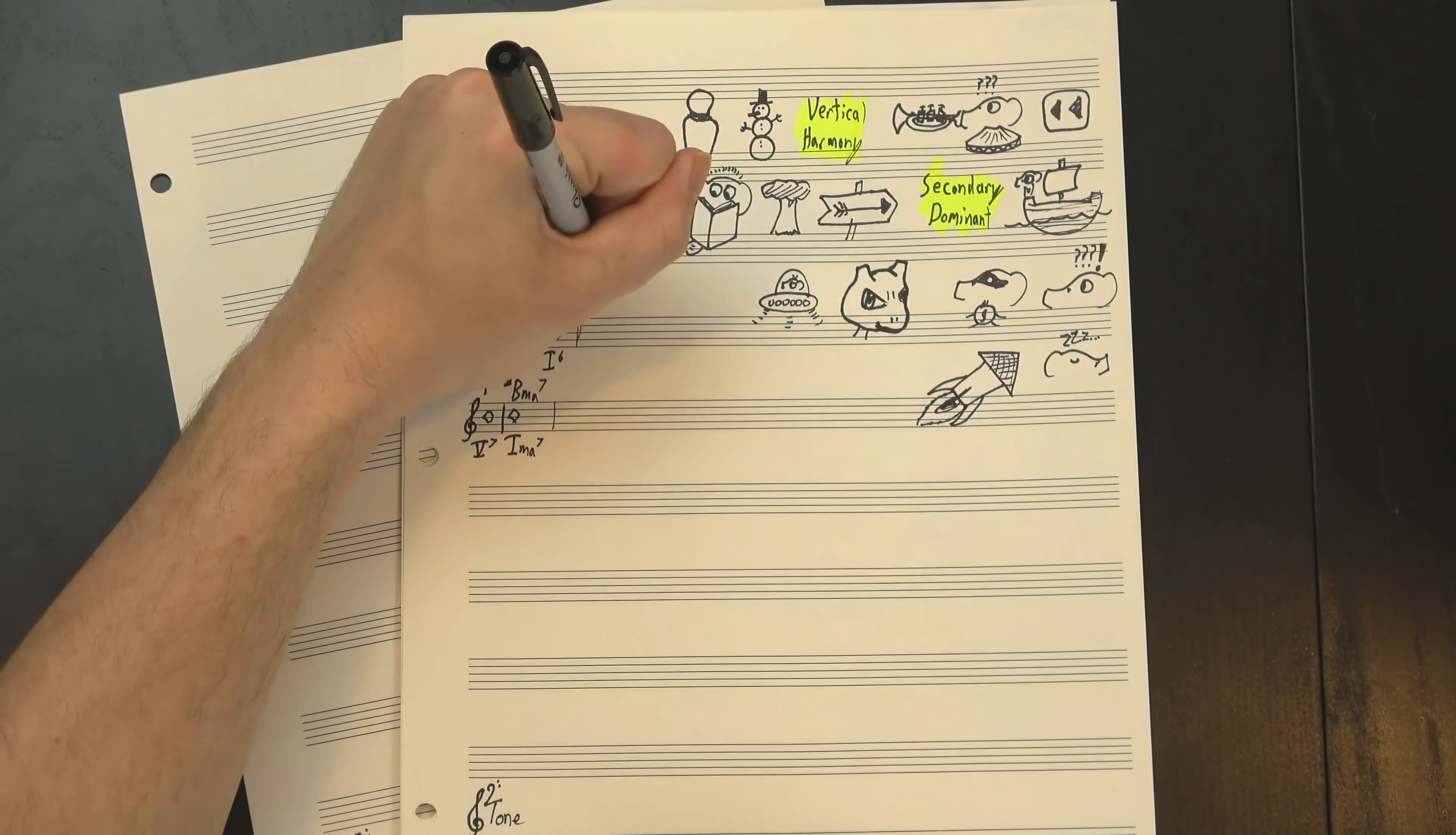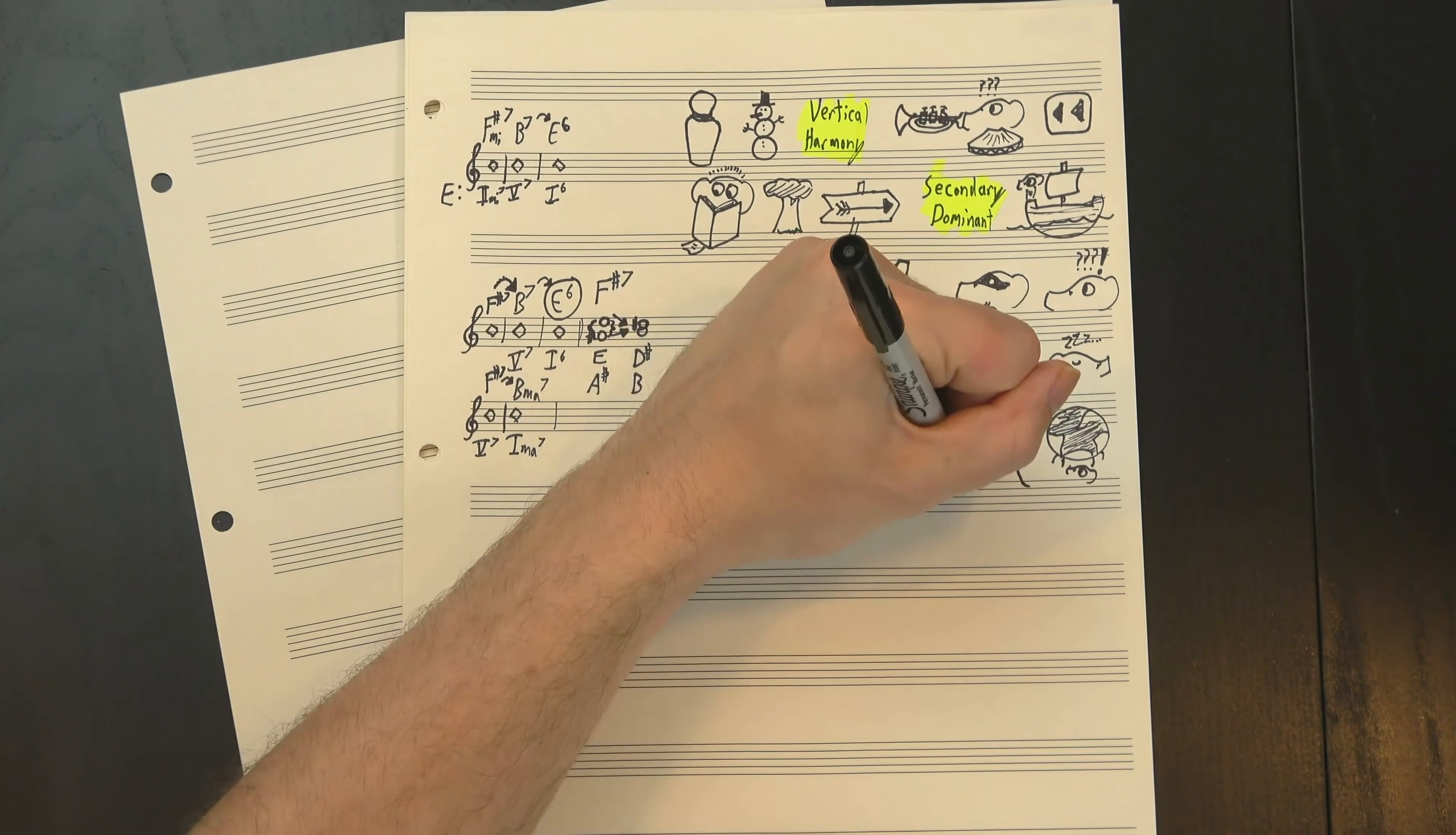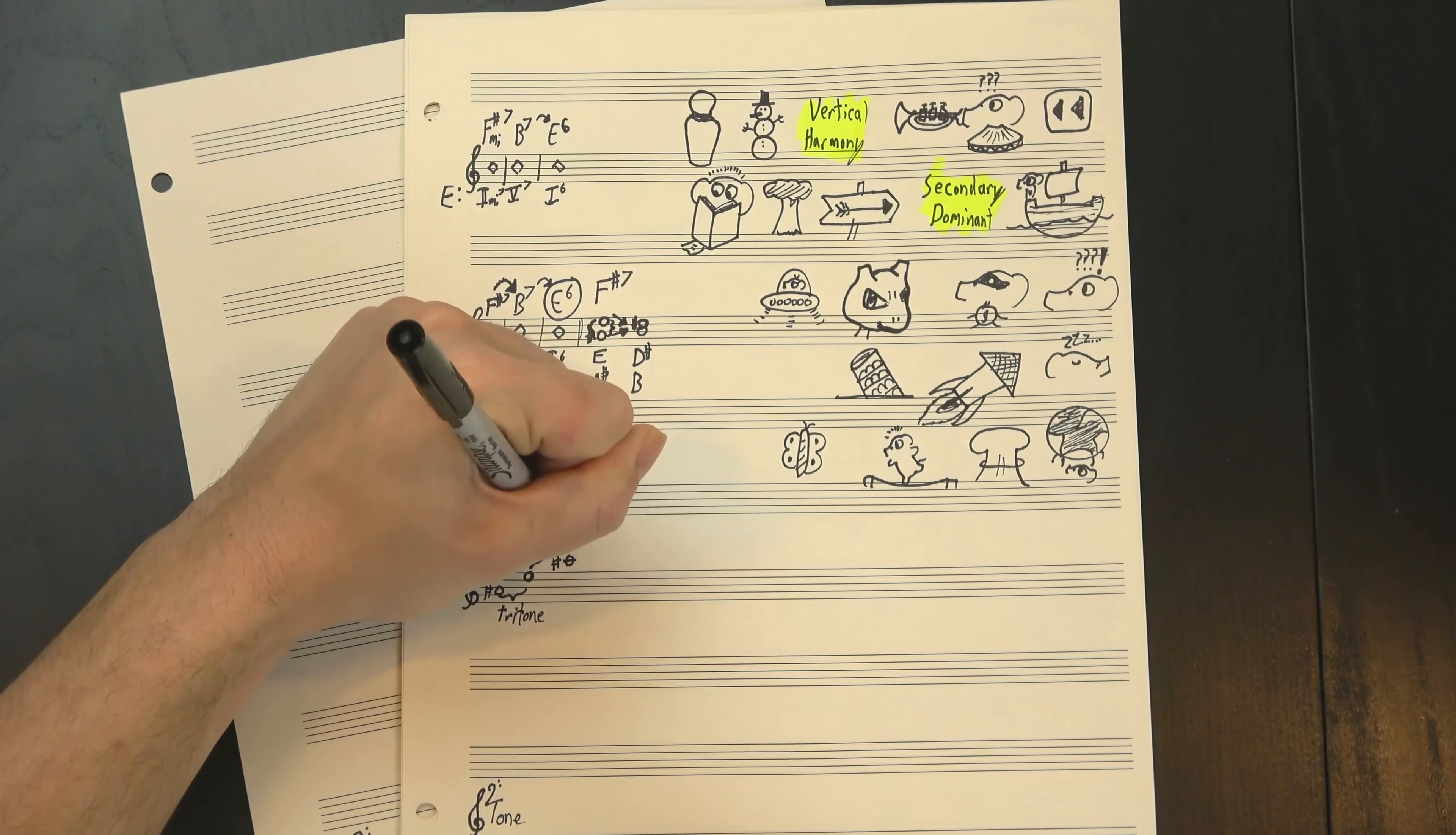But we can take things further. There's two notes in F sharp 7 that are doing most of the heavy lifting: the A sharp, which goes up a half step to B, and the E, which goes down a half step to D sharp. Together, these two notes are what really creates the resolution, and even better, they're a tritone apart, which is a really unstable interval. It really wants to collapse.